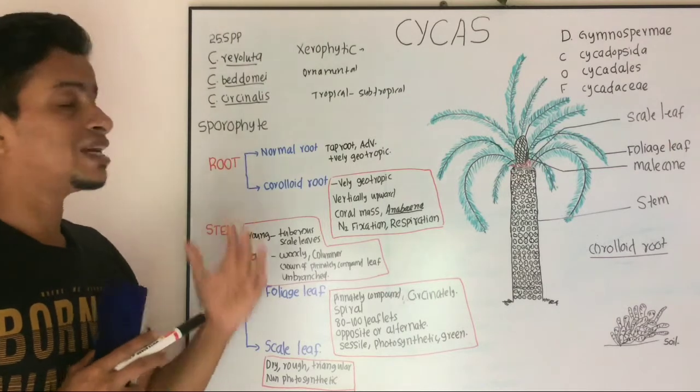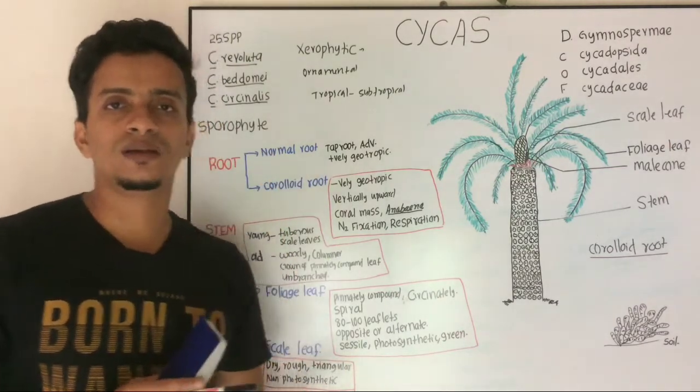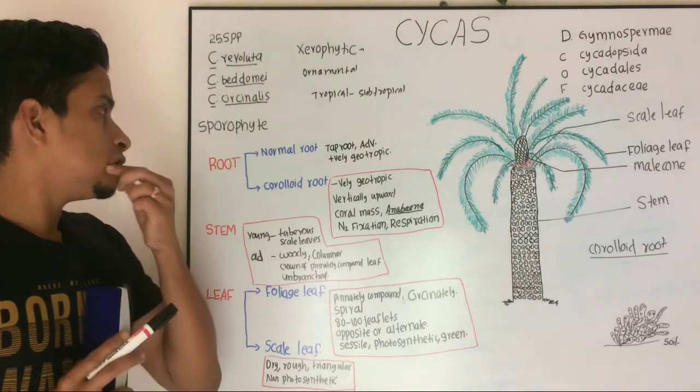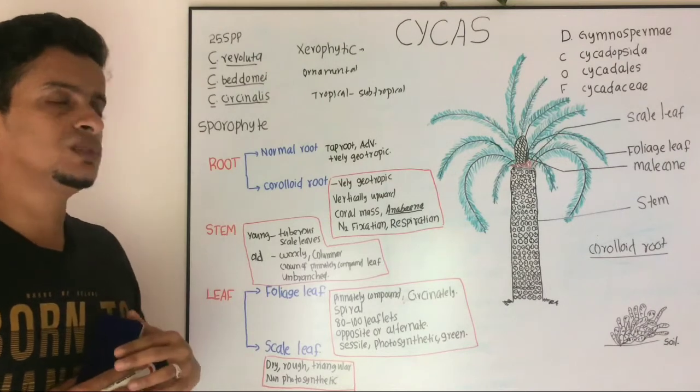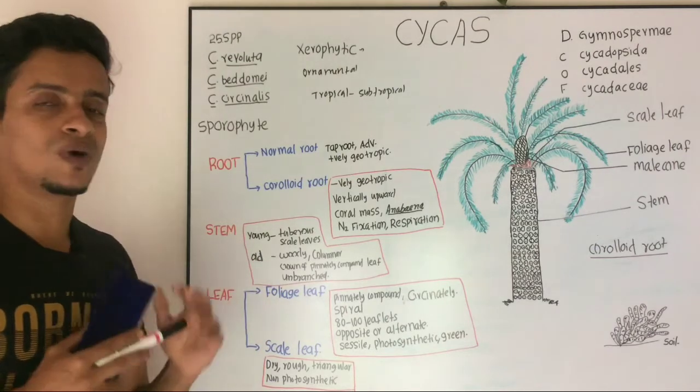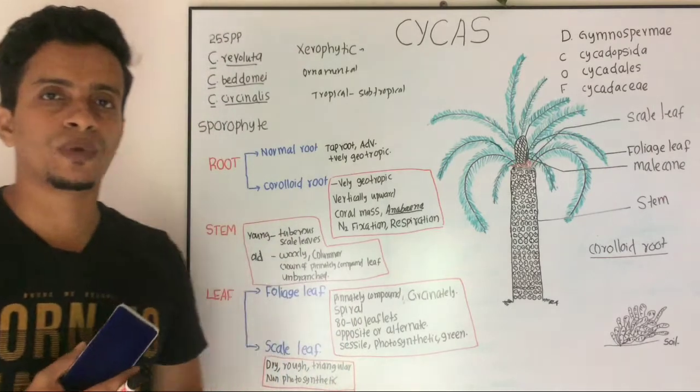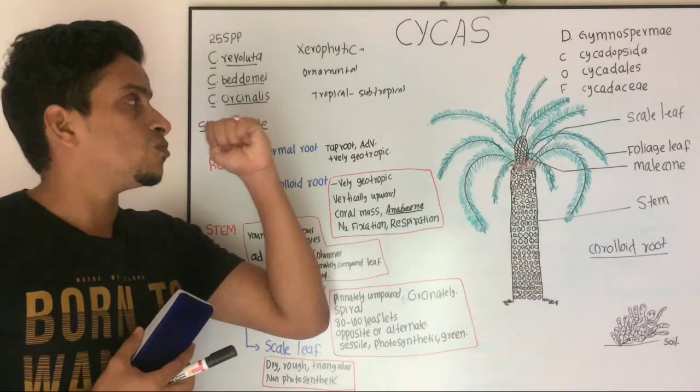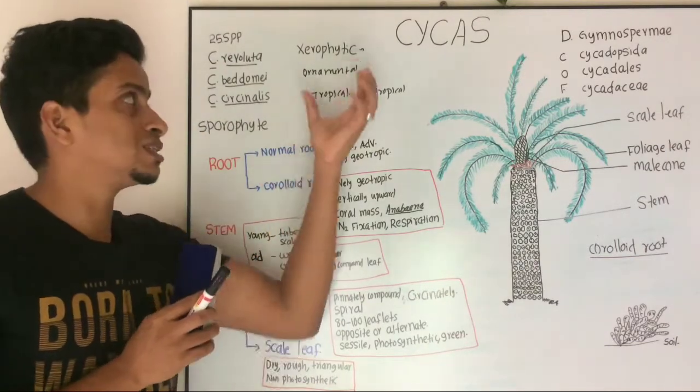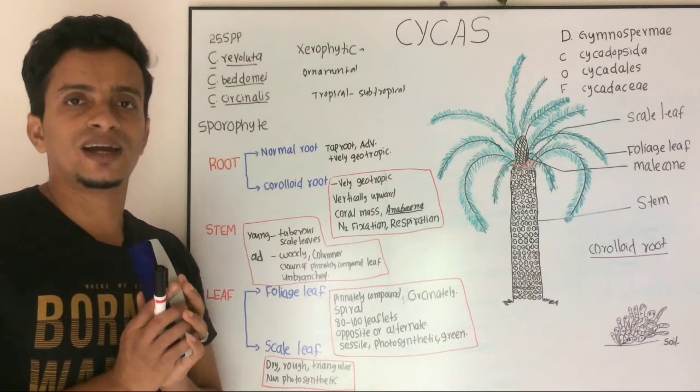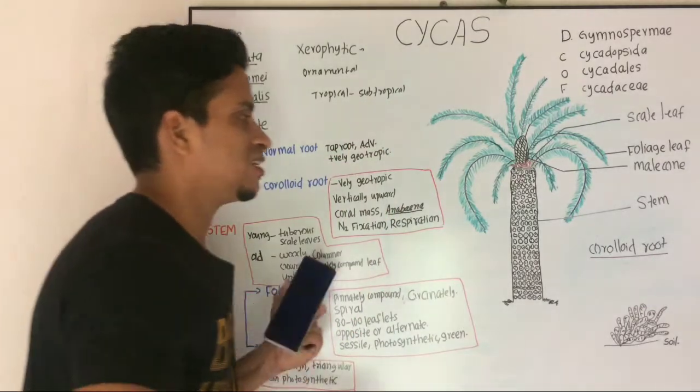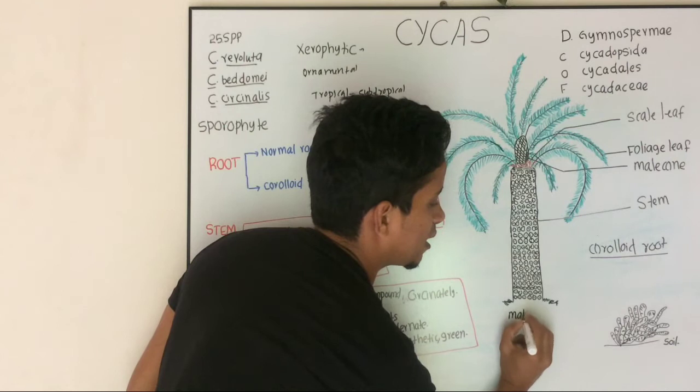Common Indian species include Cycas revoluta, Cycas beddomei, Cycas circinalis, Cycas rumphii, etc. Coming to the external morphology or morphology of this sporophyte - what is the sporophyte? Spore-bearing plant. The major striking feature of this Cycas is that you can see both male and female plants.